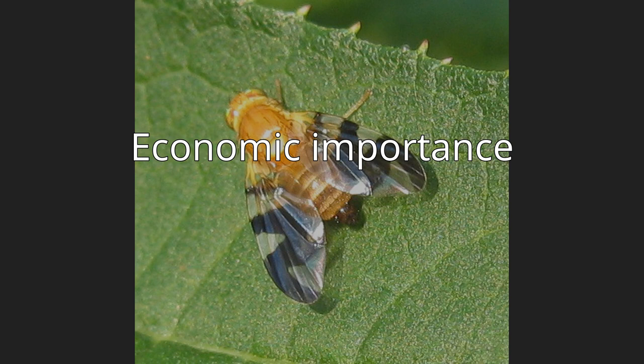Tephritid fruit flies are of major economic importance in agriculture, with some species having negative effects and some positive. Various species of fruit flies cause damage to fruit and other plant crops. The genus Bactrocera is of worldwide notoriety for its destructive impact on agriculture. The olive fruit fly, Bactrocera oleae, for example, feeds on only one plant — the wild or commercially cultivated olive, Olea europaea — and has the capacity to ruin 100% of an olive crop by damaging the fruit. Bactrocera dorsalis is another highly invasive pest species that damages tropical fruit, vegetable, and nut crops.